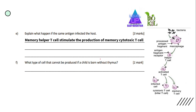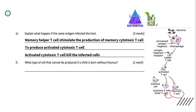Question E: Explain what happened if the same antigen infected the host three months later. The first answer is memory helper T cell will stimulate the production of cytotoxic T cell. A memory T cell will produce activated cytotoxic T cell, and activated cytotoxic T cell will kill the infected cell.